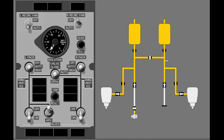The normal position of the isolation valve switch is auto. When the switch is auto, the isolation valve can be open or closed. When the pack switches are auto or high and the engine bleed air switches are on, the isolation valve is closed. But if a pack switch or engine bleed switch is selected to off, the isolation valve opens.